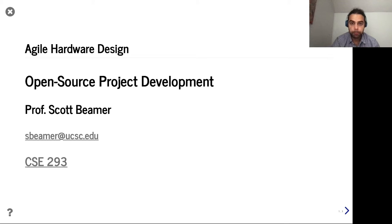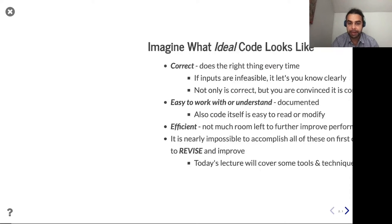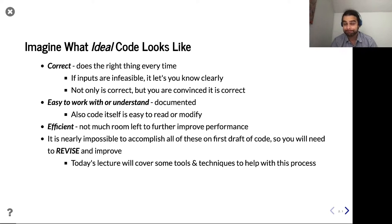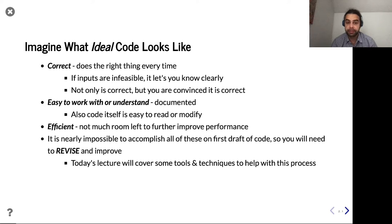Before we do that, let's ask ourselves what we think of when we think of the ideal code — what's the best project, what's the best code to work with? Number one, you want to be correct. You want to do the right thing. Sometimes maybe you have a program where certain input combinations are not allowed or it's any proper input.